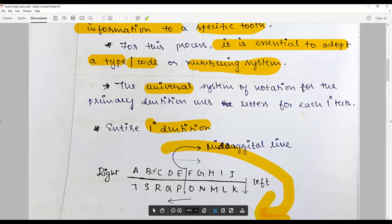From A, we go to the deciduous upper right second molar to J where it is the left maxillary deciduous second molar, K for the mandibular deciduous second molar left, and T ending as mandibular right deciduous second molar.